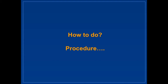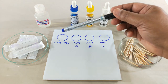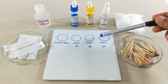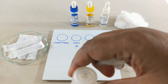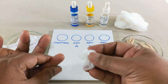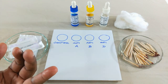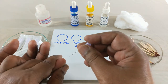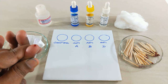Now let us see how to do this experiment. First, on a clean tile, label four spots as control, anti-A, anti-B, and anti-D. Next, sterilize the left ring finger with absolute alcohol. Prick it with a sterile needle and press out the blood. Place a drop in each spot.